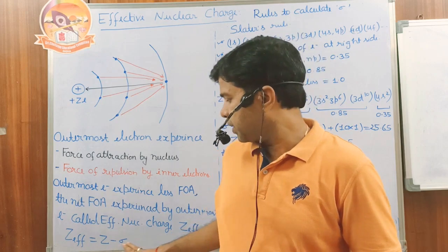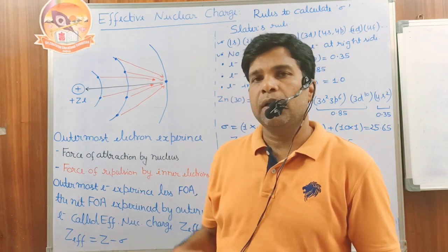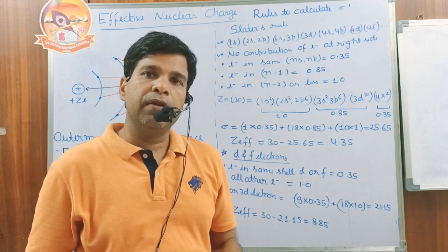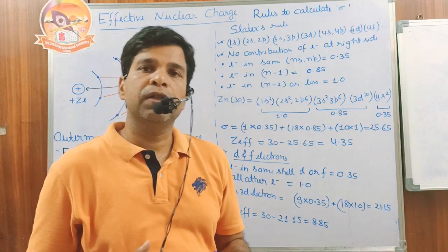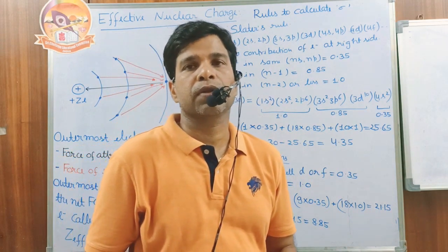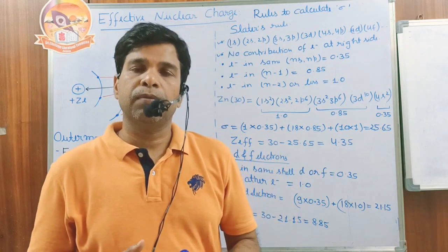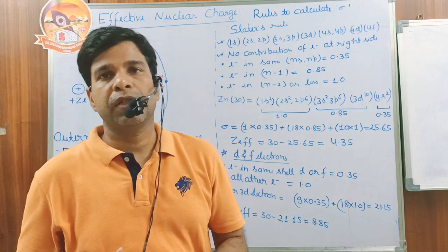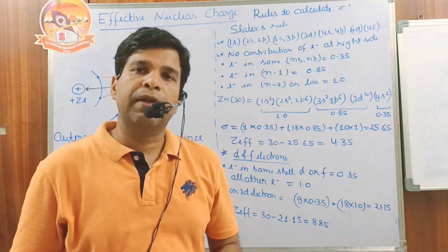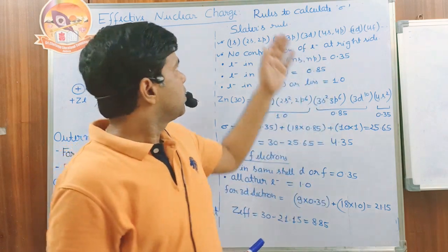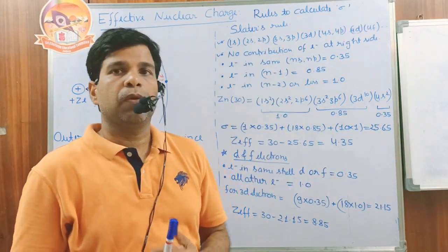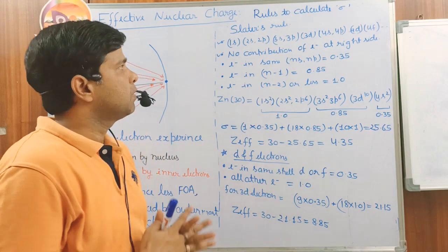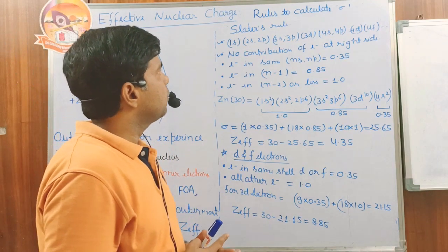Effective nuclear charge is equal to Z minus Sigma, where Z is the atomic number (the number of protons) and Sigma is called the screening constant or shielding constant. The value of the screening constant is calculated by Slater's rule.